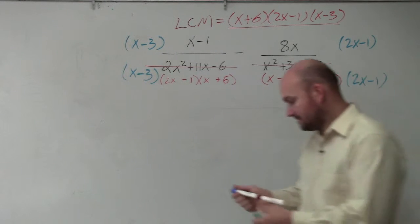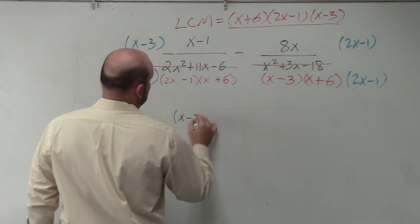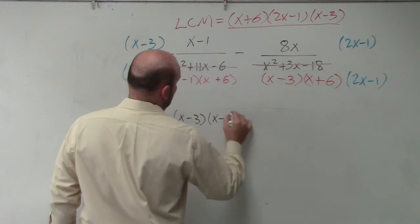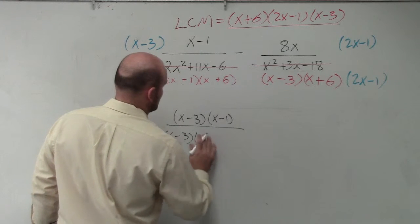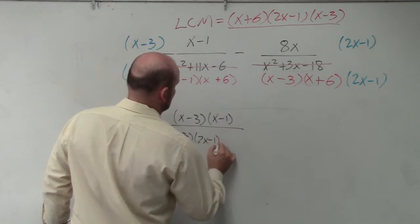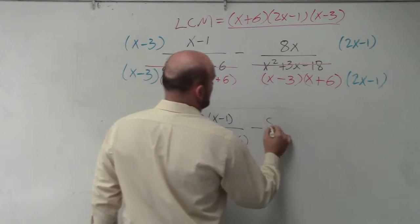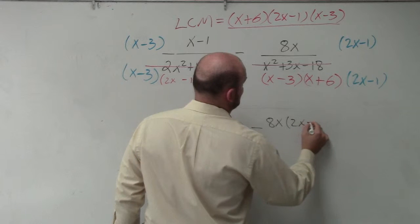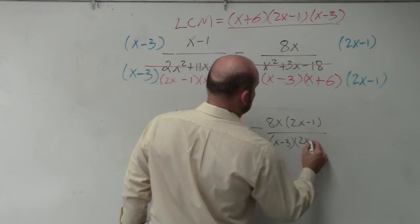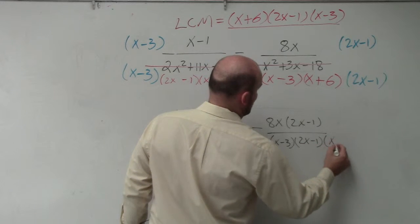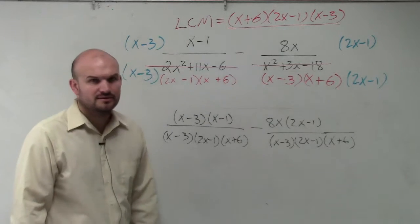So when I do that, I end up with the equation x minus 3 times x minus 1 minus 8x times 2x minus 1 all over x minus 3 times 2x minus 1 times x plus 6. Does everybody see what I did and how I did it? OK?